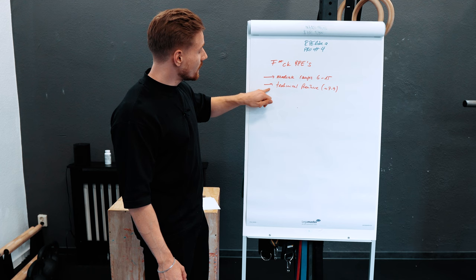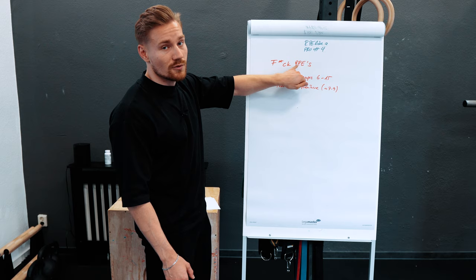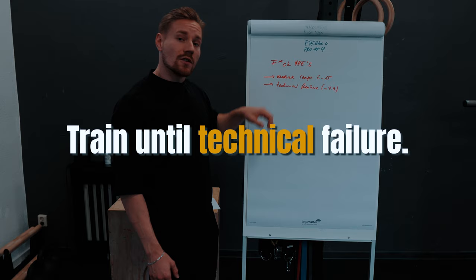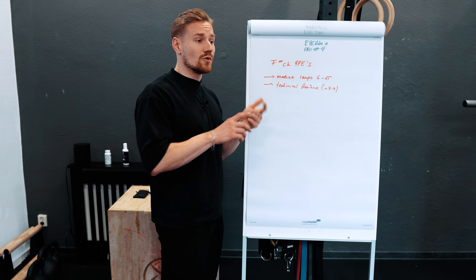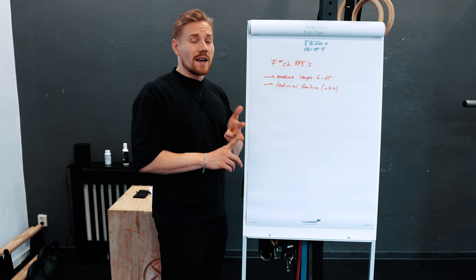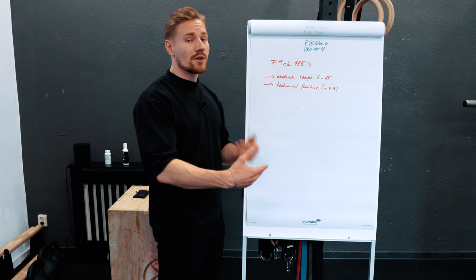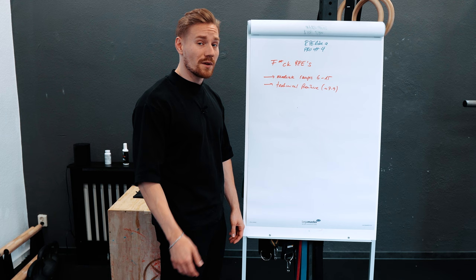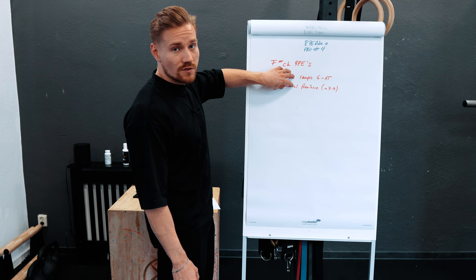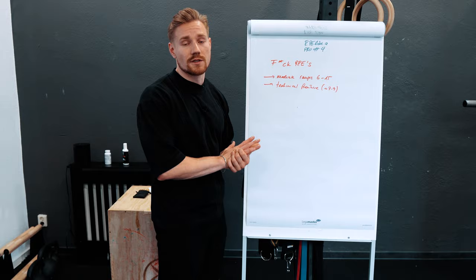The second thing is don't worry too much about RPEs in terms of relative intensity, because you're constrained to technical failure. Look at your training and notice when the speed of the rep decreases, when you use compensation movements, when your form is reaching a point that's not okay anymore. That technical failure will probably equal, for a beginner, an average RPE pretty close to failure — somewhere between RPE 7 and 9 when form starts to break down. Those two things are totally sufficient at the beginning; all the other stuff is for the advanced lifter.